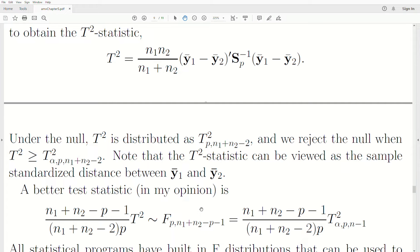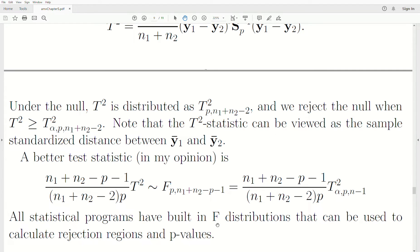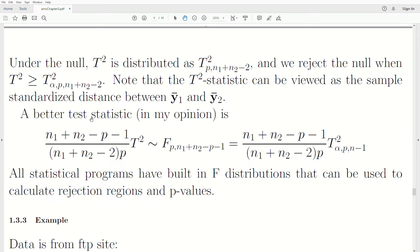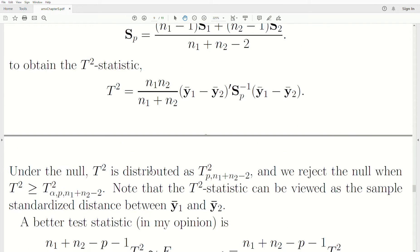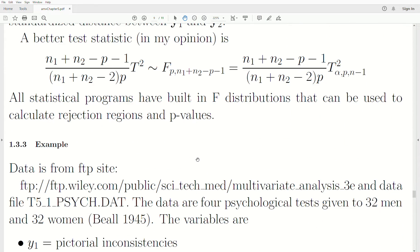A better statistic, in my opinion, is this. We take the t-squared statistic, a Mahalanobis distance, times this constant, and then it's distributed with an F distribution. If you take this constant times the critical value, that's also equal to F. One reason we do that is because all statistical programs have built-in F distributions. We don't have to use a book or table to calculate the rejection region with t-squared. This has a nice geometric feel because it's a standardized distance between two mean vectors.